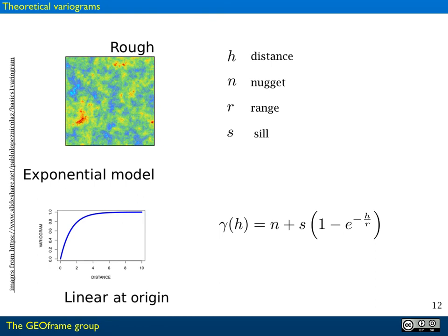One famous model is the exponential model, which is pretty simple. Even in this case, we have the same recipe. The variogram is n, meaning the nugget, plus s and an expression between parentheses. In this case, the expression is 1 minus e elevated to the h over r. This model is linear at the origin and so its appearance is pretty rough.